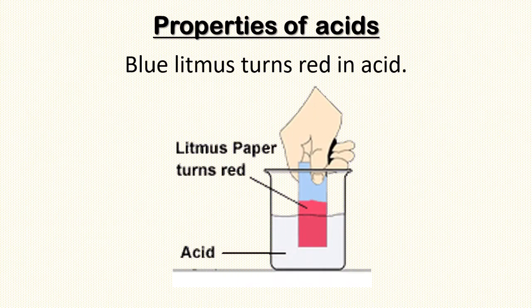Blue litmus turns red in acid. Blue litmus is an indicator; when we dip it in acid, it turns red, indicating that the solution is acidic.